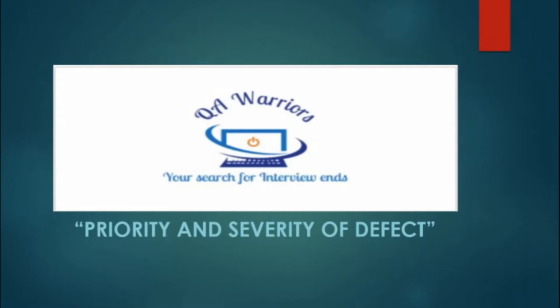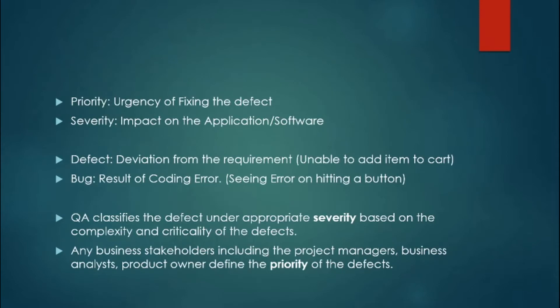Today's topic is priority and severity of defect. In the prior video we have already seen the bug life cycle, and when we talk about the bug life cycle, the concept of priority and severity comes up. QA and the business are the best persons to decide the priority and severity of the defect.